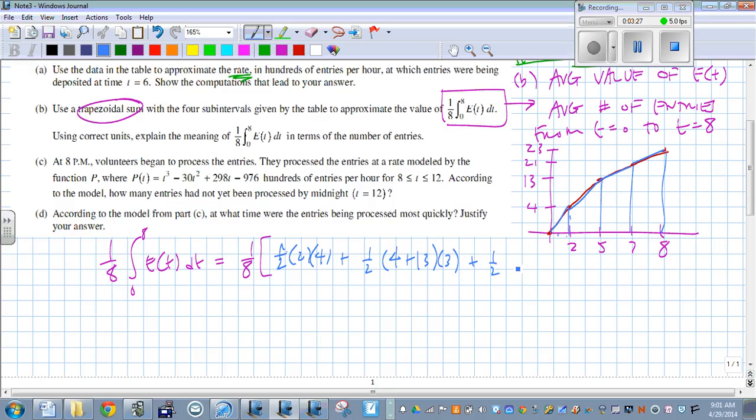Plus one half times, for our next one, we've got 13 for our first base, 21 for the second base. The height, the distance between these two, 7 minus 5 is 2. Plus one half times 21 plus 23, times a height of 1.